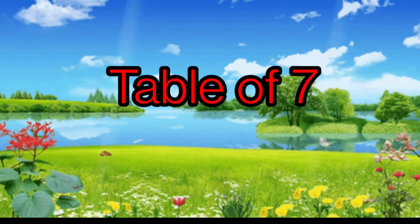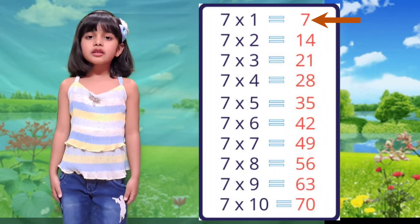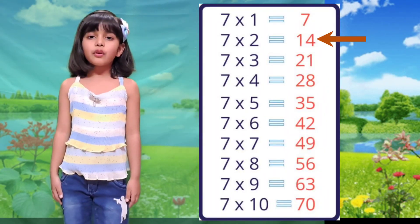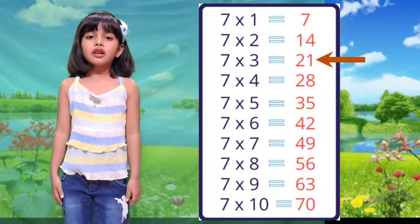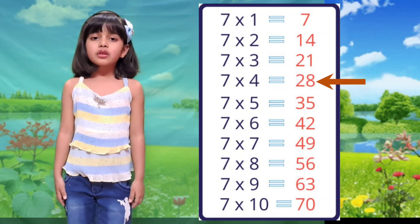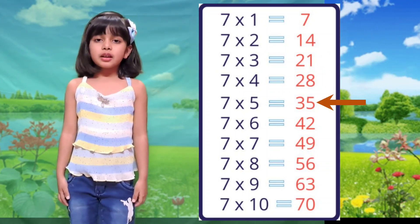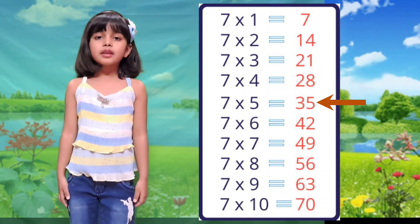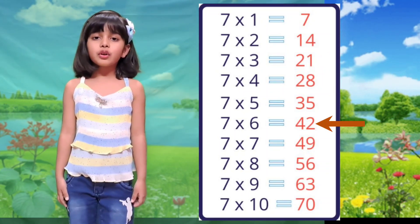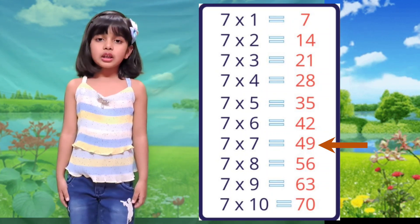Table of 7. 7×1 is 7, 7×2 is 14, 7×3 is 21, 7×4 is 28, 7×5 is 35, 7×6 is 42, 7×7 is 49.